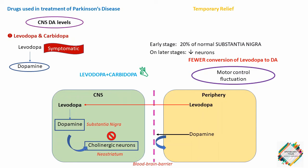Without carbidopa, much of the drug gets decarboxylated to dopamine in the periphery, resulting in nausea, vomiting, cardiac arrhythmias and hypotension. That means levodopa in the periphery gets converted to dopamine by the decarboxylase enzyme and thereby produces dopamine-induced side effects. In order to prevent that, we usually administer carbidopa with levodopa.